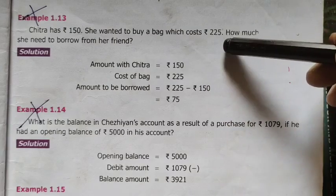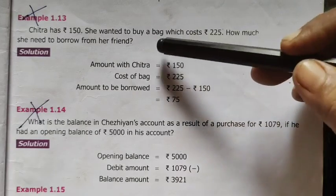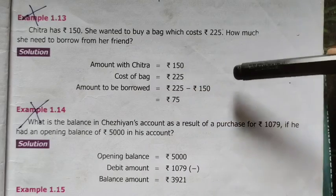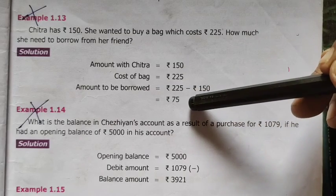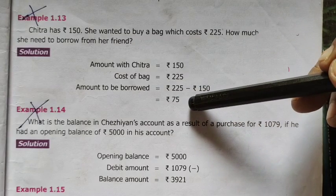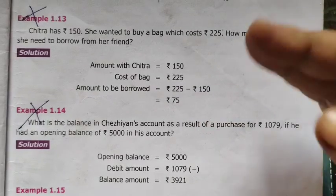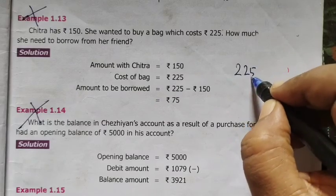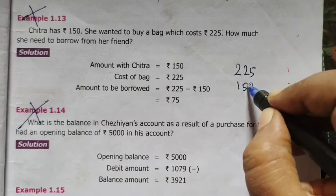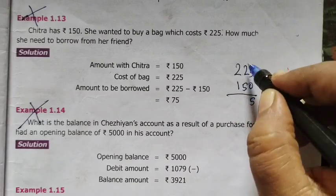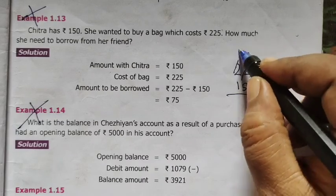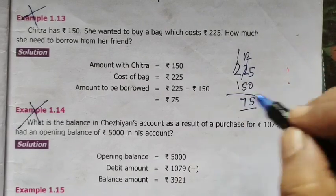The cost of the bag is 225. She has only Rs 150, so definitely she has to borrow Rs 75 from her friend. This is simple sum only, no need much calculation. Just you are subtracting 225 minus 150. If you borrow 12, 12 minus 5 is 7, so 75.